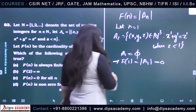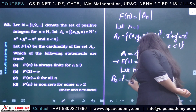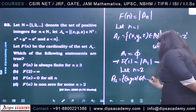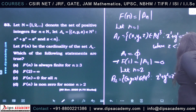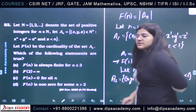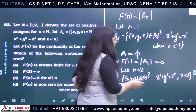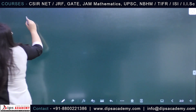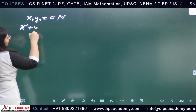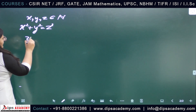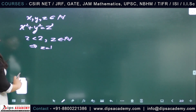Now let us discuss n = 2. A_2 is defined as the set of (x, y, z) in N³ such that x² + y² = z², and z < 2. Here z is a natural number and z is strictly less than 2, which implies z = 1. So we have only one choice for z.